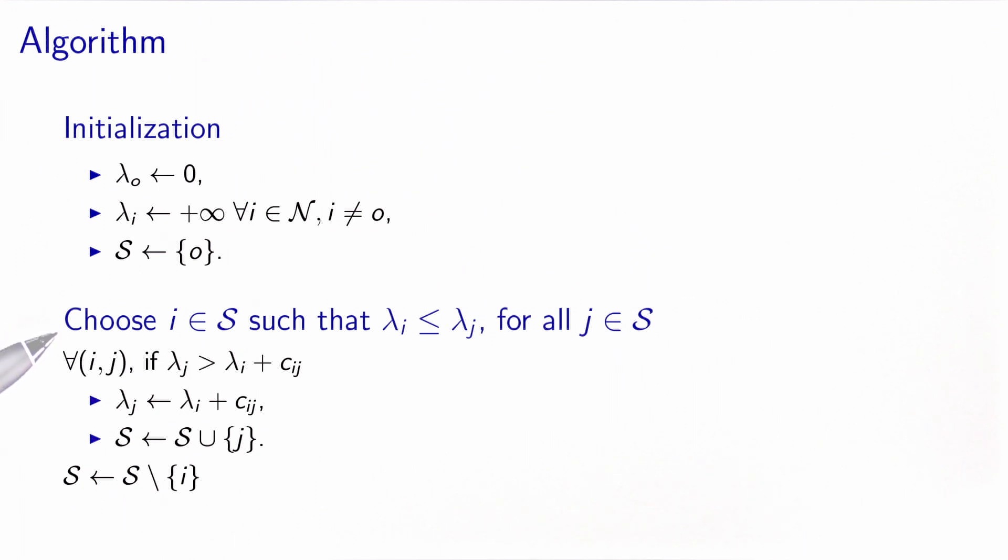Then at each iteration, we choose a node in S such that its label is less than any other label in the set. Then we treat the node, meaning that for each outgoing arc, we check if the optimality condition is verified. If not, we update the label and add the node to the set of nodes. Once all the arcs have been visited, we remove the node from the set of nodes, and we stop the iteration as soon as this set of nodes is empty.